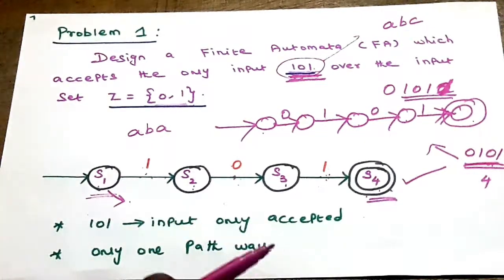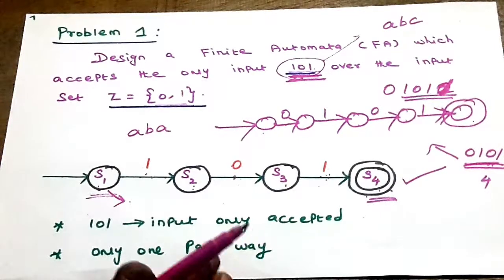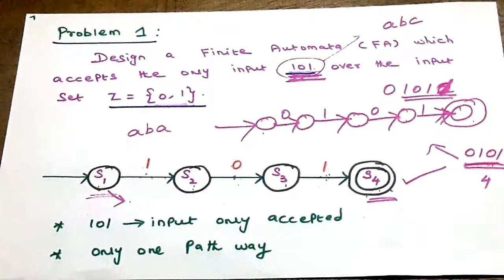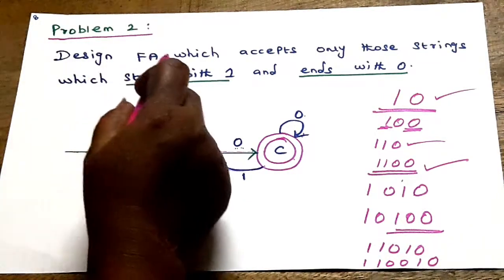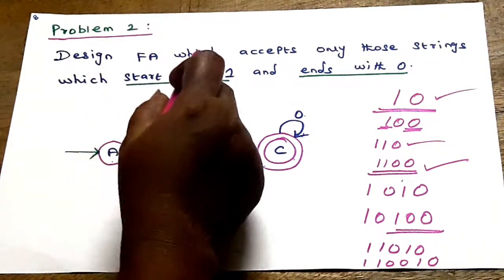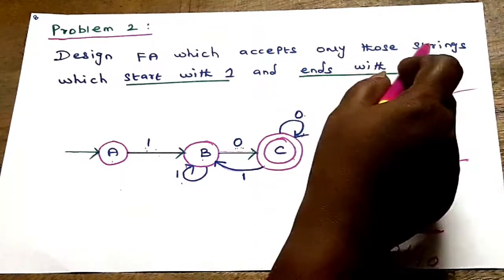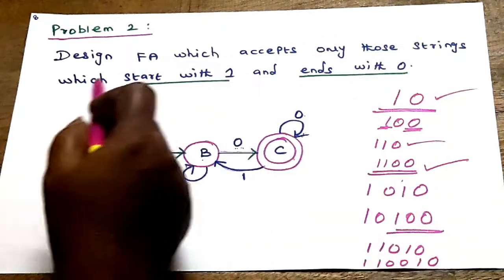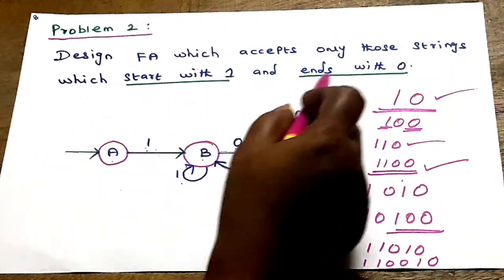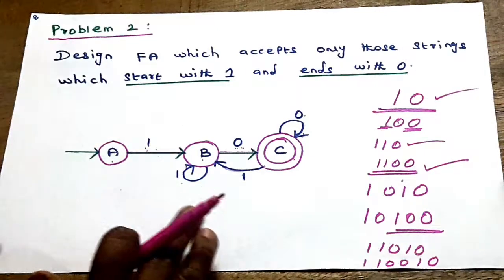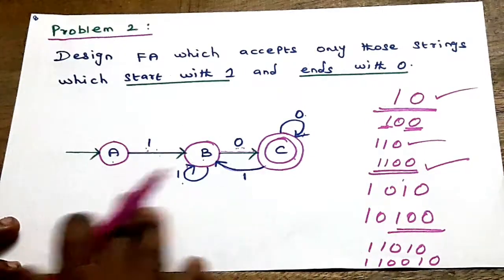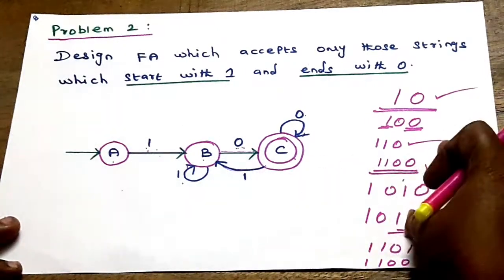Advanced concept problem: design a finite automaton which accepts only those strings which start with 1 and end with 0. Transition diagram over input set.